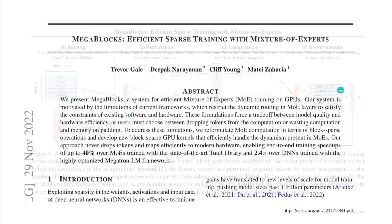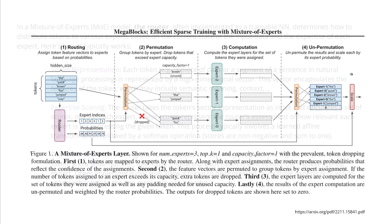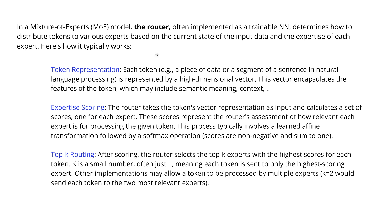For an overview of Megablocks: incoming tokens are routed through what they now call a router, instead of the old gating network. The router has a probability assigned to it, then you have the permutation, the computation, and it is done. The router is a crucial element — it is implemented as a trainable neural network. The router determines how to distribute individual tokens to various experts based on the current state of the input data and the expertise of each expert system.